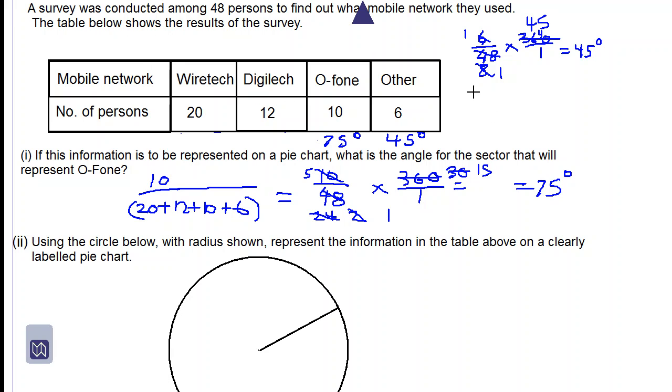What about Digilect? 12 out of 48 multiplied by 360 over 1. 12 into 12 is 1. 12 into 48 is 4. 4 into 4 is 1. 4 into 36 is 9. We get 90 degrees.